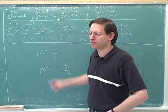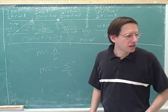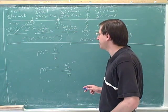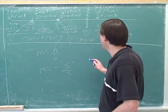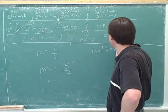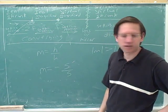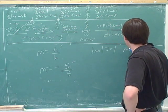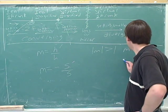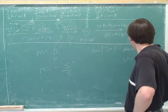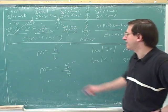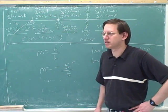Remember how we know when an image is magnified looking at M. When the absolute value of M is greater than 1, the image is magnified — the image is bigger than the object. When it's shrunk, the absolute value of M is less than 1. We already talked about what the sign means: positive sign means upright, negative sign means inverted. Now let's focus on the absolute value.